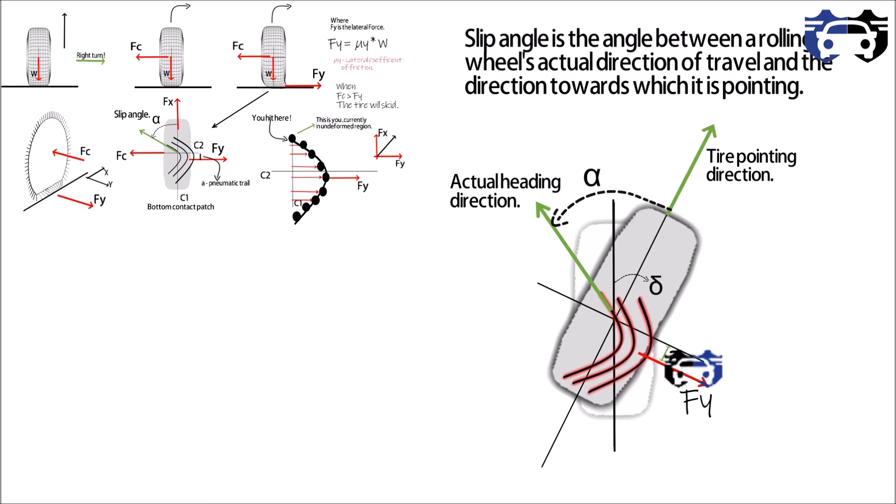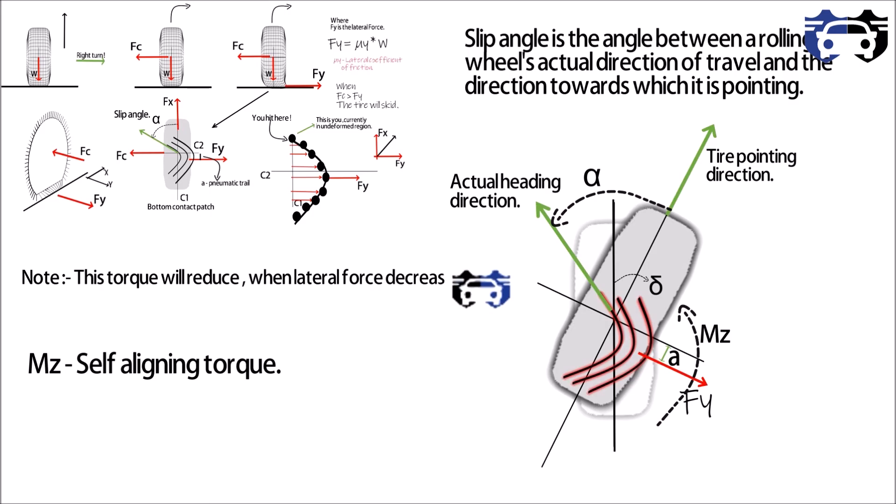Now as the lateral force is acting at a distance from the center which equals pneumatic trail, this will develop a torque Mz in clockwise direction, where Mz is called the self-aligning torque. Note that this torque will reduce when the lateral force decreases, slip angle decreases. As a decrease in them, this will lead to the decrease in pneumatic trail and the self-aligning torque will decrease.